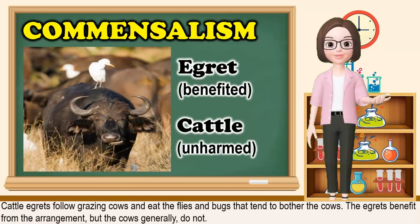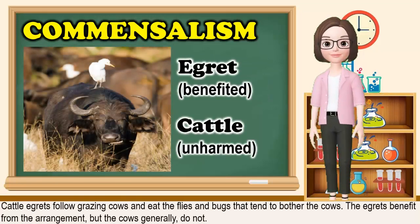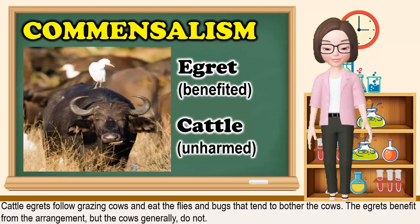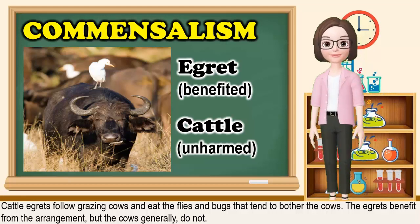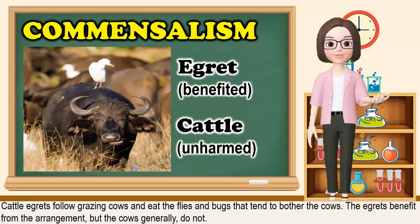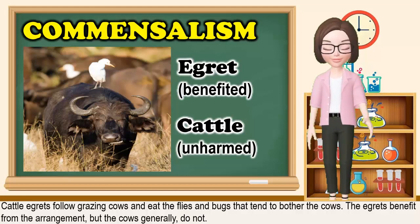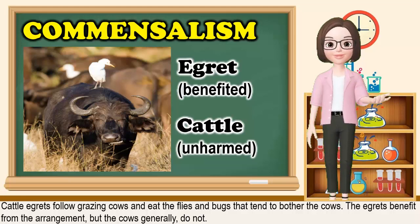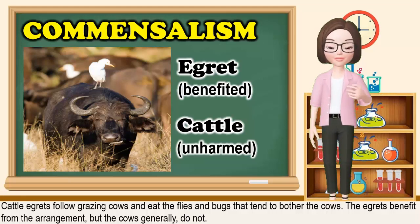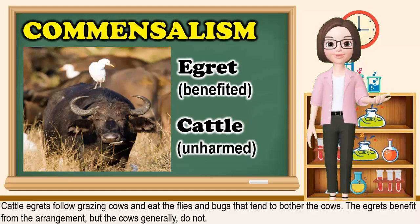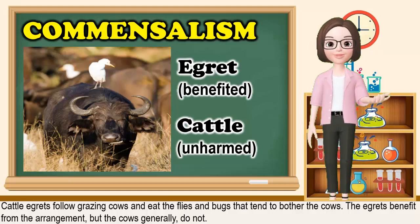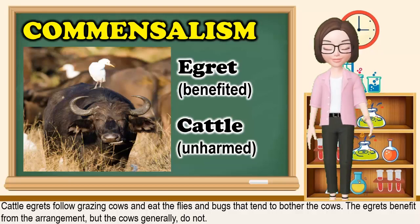Let's take a look at another example. Cattle egrets follow grazing cows and eat the flies and bugs that tend to bother the cows. The egrets benefit from the arrangement, but the cows generally do not.